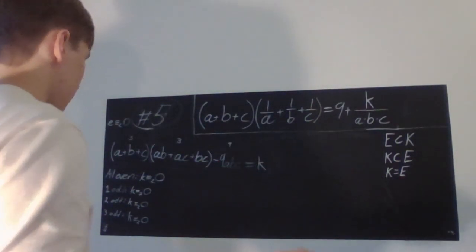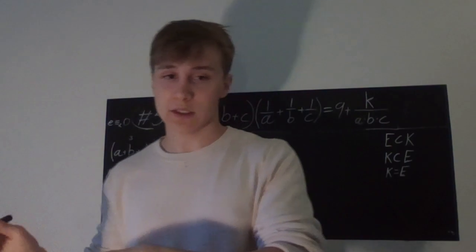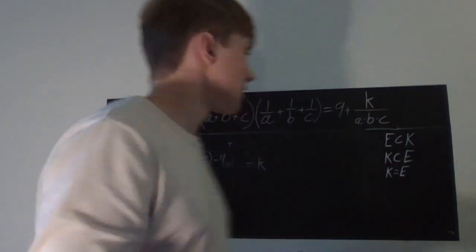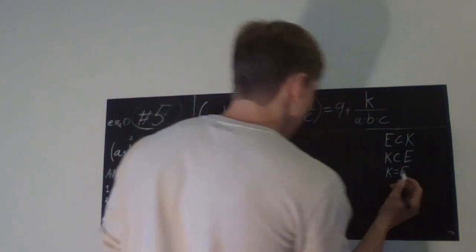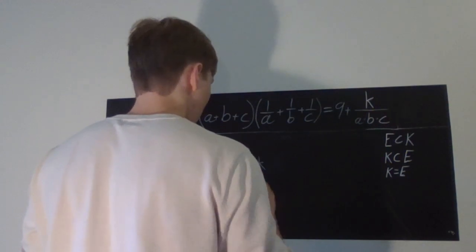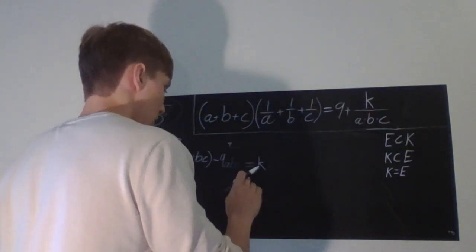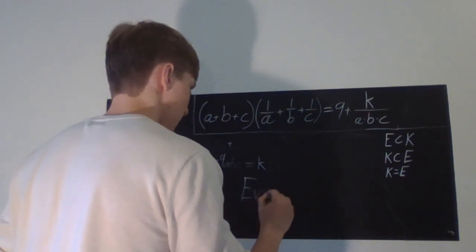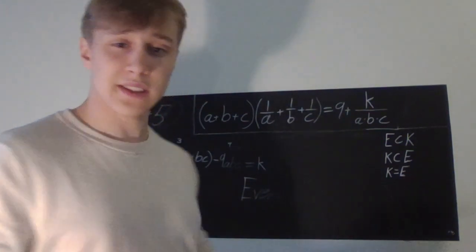And k can only be even integers. Therefore the sets are equal to each other. And k that can be obtained are all even. They're all even. So yeah, that's the answer.